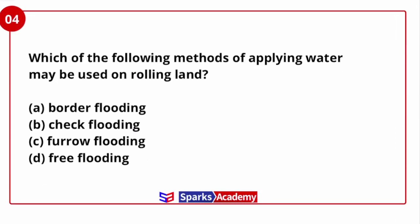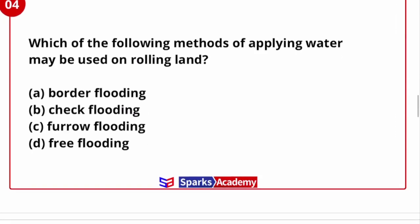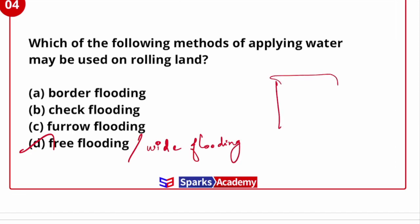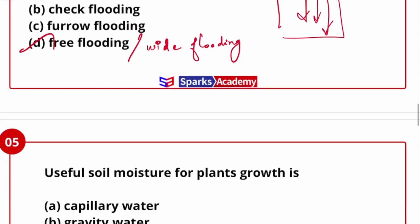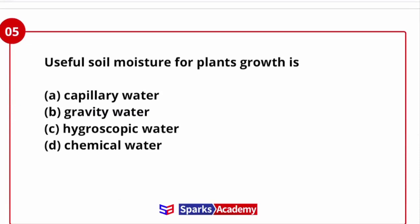Which method of applying water may be used on rolling land? For rolling land, we prefer the method also called wild flooding. Next question: useful soil moisture for plant growth is — capillary water, gravity, hygroscopic, or chemical? The answer is capillary water.